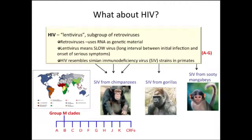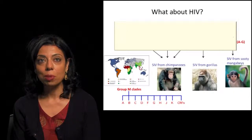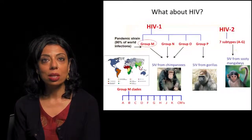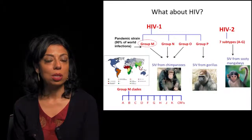HIV is a lentivirus, which is a subgroup of retroviruses. Retroviruses specifically means that RNA is the genetic material of those viruses. Lentivirus means it is a very slow virus, where there is a long period of asymptomatic infection between the initial point of infection and the time when the patient manifests symptoms. HIV most resembles a group of lentiviruses present in various primates called the simian immunodeficiency viruses, and specific HIV strains most likely came from specific primates.